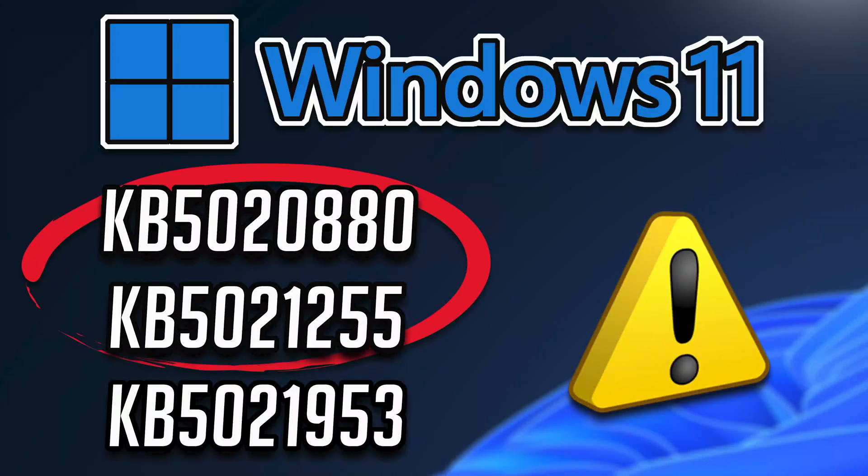If you try to download or install the update KB5020880, among others, and the update fails and throws you errors, then this could be happening because your Windows 11 update database is corrupt or damaged. So in this tutorial we'll show you three solutions to resolve this problem in a quick and easy way.